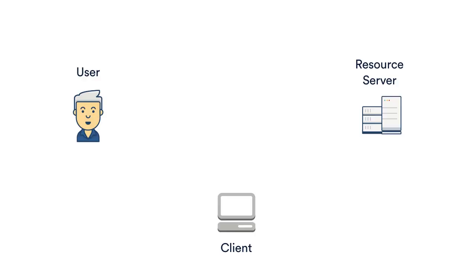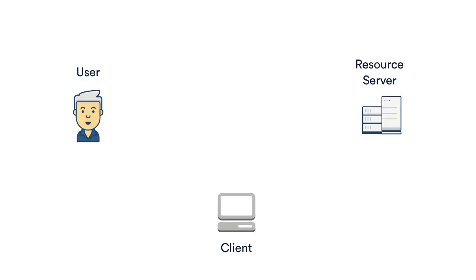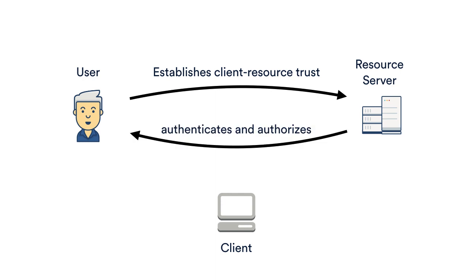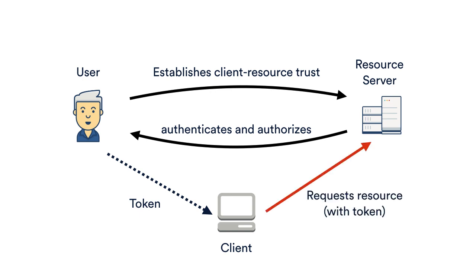So how does this work with APIs? Here we've got the three pieces of an API transaction: the user, the client that they're using, and the resource server that holds the data they want to access. The user has to somehow establish a client-resource trust with the resource server, which establishes the client authorization piece. But to do that, the user themselves have to authenticate and be authorized. Once all this is set up, the client is given some kind of token — either directly or indirectly — and that token can then be used to access resources with the resource server. Token generation is also where client authentication can happen.